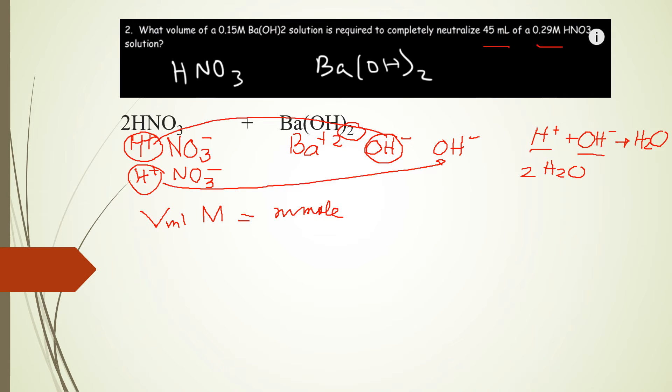So you have to remember that for every two nitric acid, you will need only one barium hydroxide. It's a 2 is to 1 proportion.